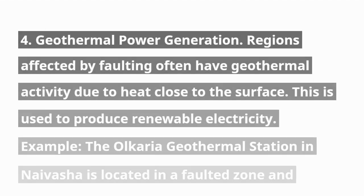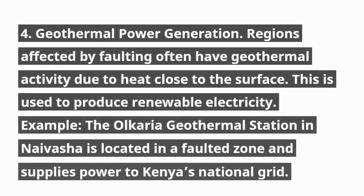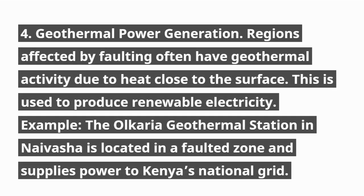4. Geothermal Power Generation. Regions affected by faulting often have geothermal activity due to heat close to the surface, which is used to produce renewable electricity. For example, the Olkaria Geothermal Station in Naivasha is located in a faulted zone and supplies power to Kenya's national grid.